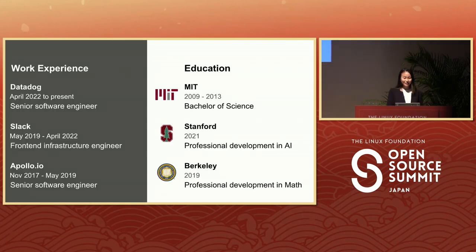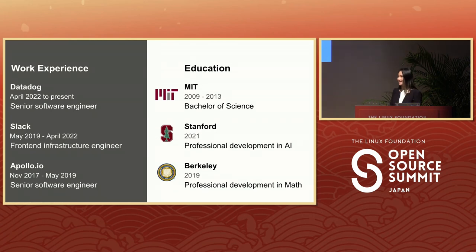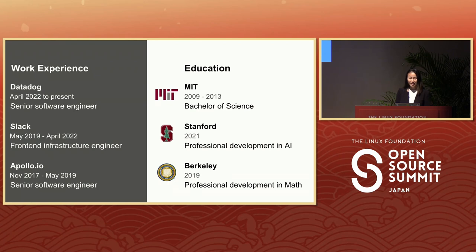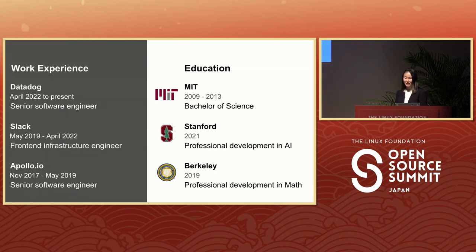A little bit about myself. I'm currently a senior software engineer at Datadog. I've been working there since April 2022. Before then, I worked for three years at Slack on the front-end infrastructure team. And before then I worked at Apollo.io, which is now a series D startup. For my education, I did my undergraduate at MIT, and following graduation, I did a couple of professional development courses at Stanford and Berkeley.